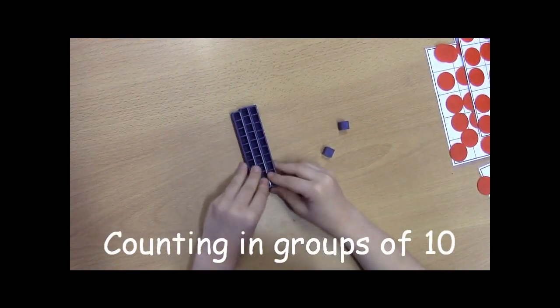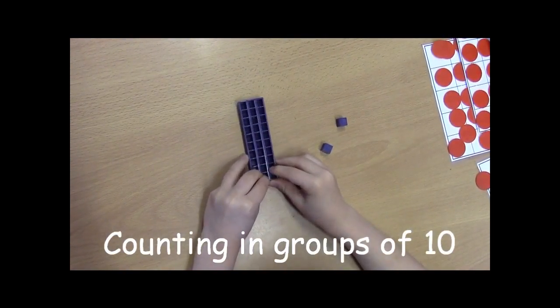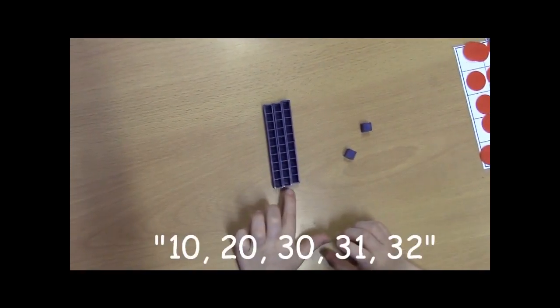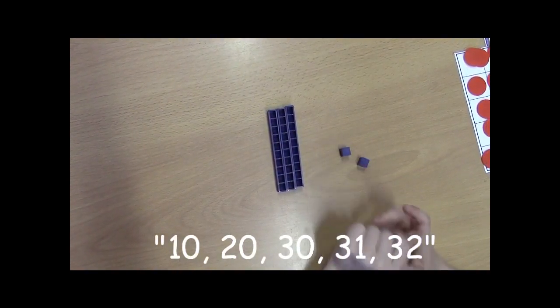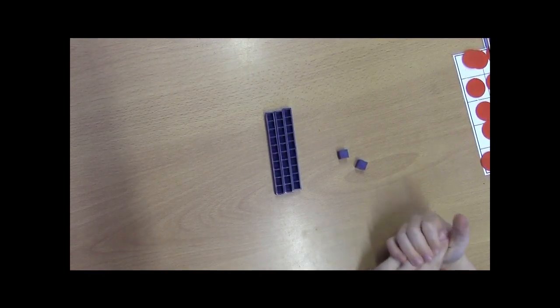It's going to be all ten because they're all the same size. Ten, twenty, thirty, thirty-one, thirty-two. Good, alright? Good.